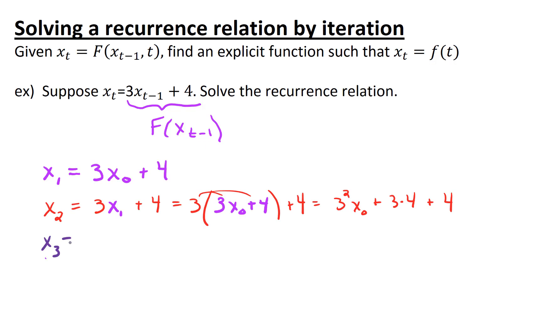Let's do a few more. x sub 3, according to our rule, is 3 times the previous term plus 4. Let's plug in what we know about that previous term. That previous term was given right up here. It's 3 squared x0 plus 3 times 4 plus 4. Tidying that calculation up, we've got some distribution to do again. And so we've got 3 cubed x0 plus 3 squared times 4 plus 3 times 4 plus 4.